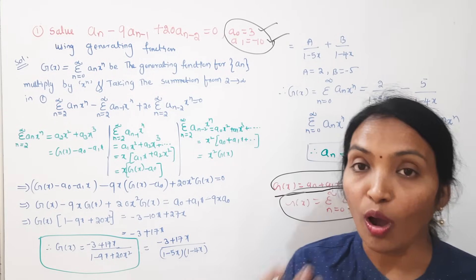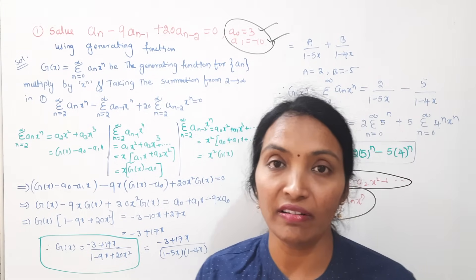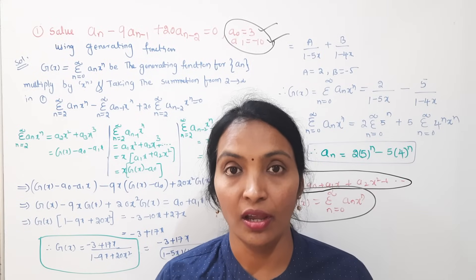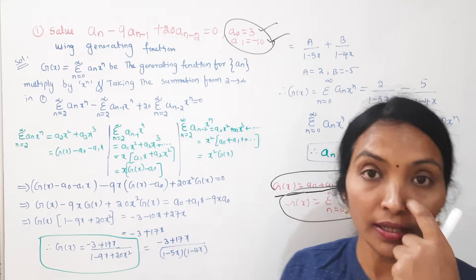If you don't need to solve the recurrence relation using characteristic roots, then you can go for the generating function — it is easier compared to the characteristics method.